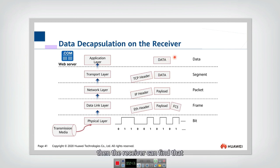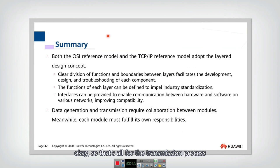Then the receiver can find that, okay, this is an HTTP request. So that's all for the transmission process. Each layer can do something and they will check and finish the corresponding functions and then provide the payload to the upper layer. So that is decapsulation.